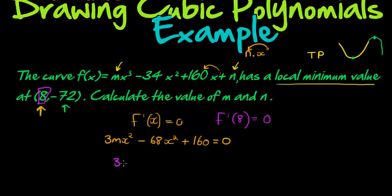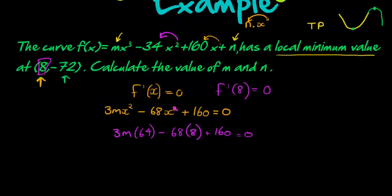Which means that we have 3m(64), that's 8 squared, minus 68. Sorry, that shouldn't have a square there. That was 2 times negative 34. So, that's just 68x to the power of 1 because I didn't subtract the exponent. I apologize. Times 8 plus 160 is equal to 0.